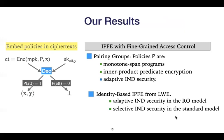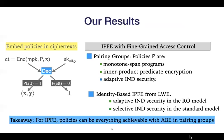Our results are two schemes. One is in pairing groups, where the policies can be monotone span programs or inner product predicate encryption — that is, orthogonality testing — where the attributes are hidden. These schemes are adaptively secure. We also propose lattice-based schemes, which achieve adaptive security in the random oracle model and selective security in the standard model. The takeaway is that what we know how to achieve with ABE policies, we also know how to construct with functional encryption combined with those ABE policies.